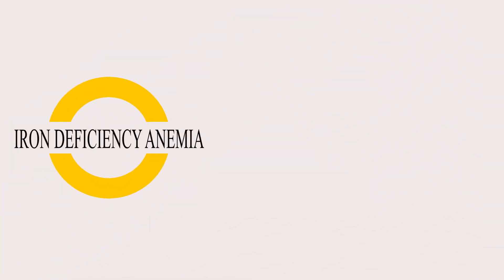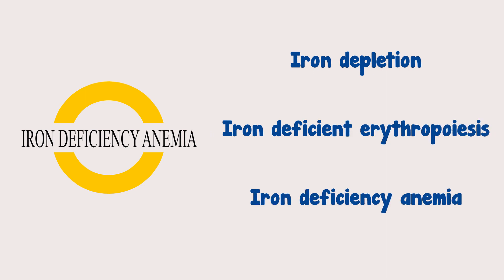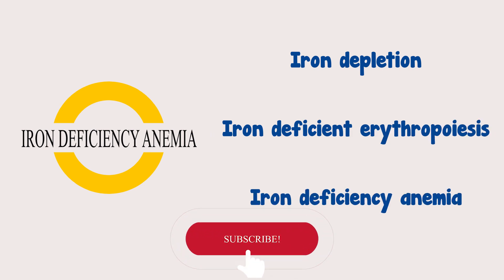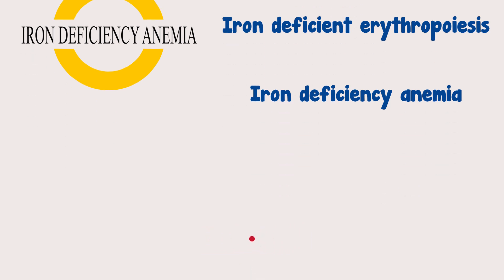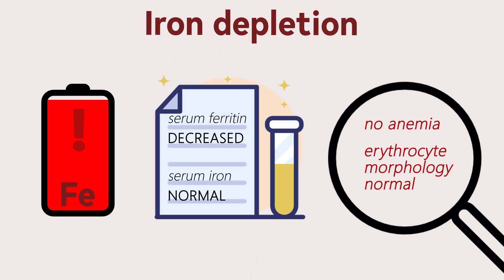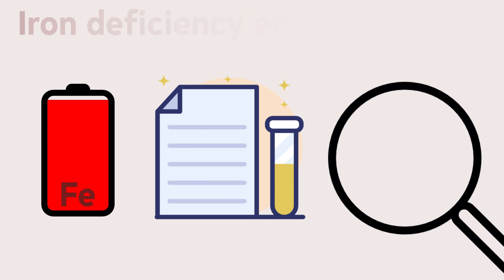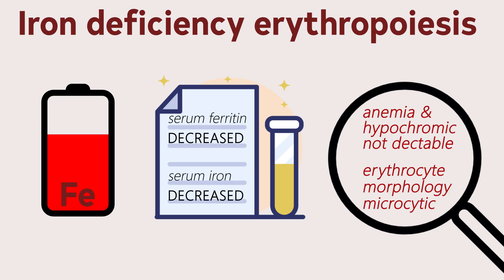Iron deficiency anemia develops in three stages: iron depletion, iron deficient erythropoiesis, and iron deficiency anemia. At the initial stage, iron stores are exhausted as indicated by decreased serum ferritin, while serum iron is normal and there is no anemia. In iron deficient erythropoiesis, there is insufficient iron to insert into the protoporphyrin ring to form heme; serum iron is depleted but anemia and hypochromia are still not detectable, though erythrocytes may become slightly microcytic.